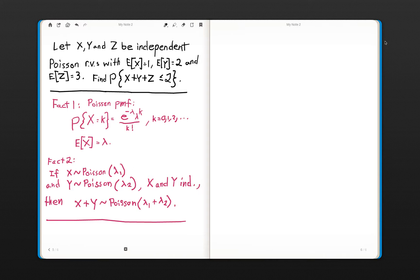We'd like to determine what the probability of their sum is, given the various parameters of the individual random variables. So, we have X, Y, and Z independent Poisson random variables with respective expectations of 1, 2, and 3. And again, we'd like to find the probability that their sum is less than or equal to 2.